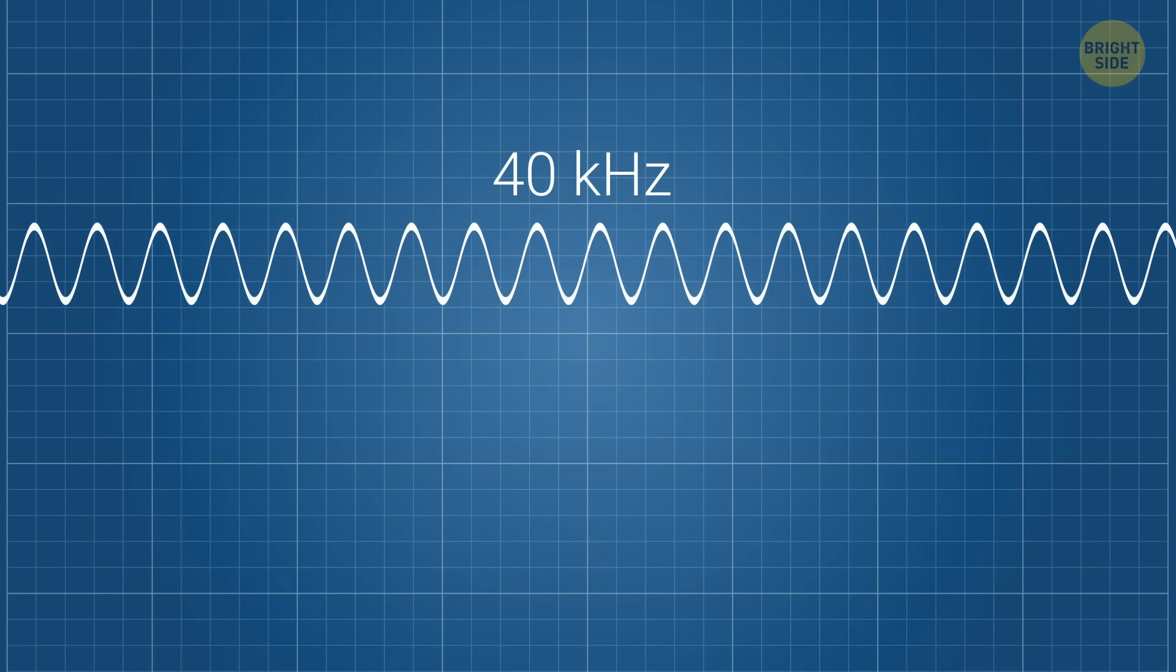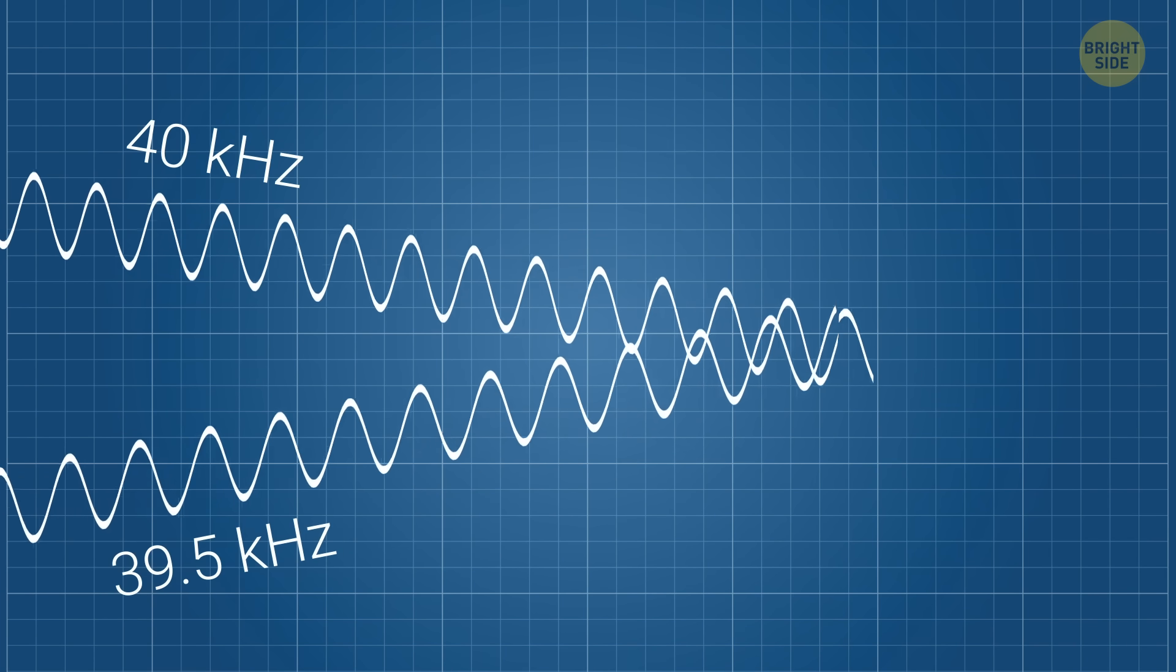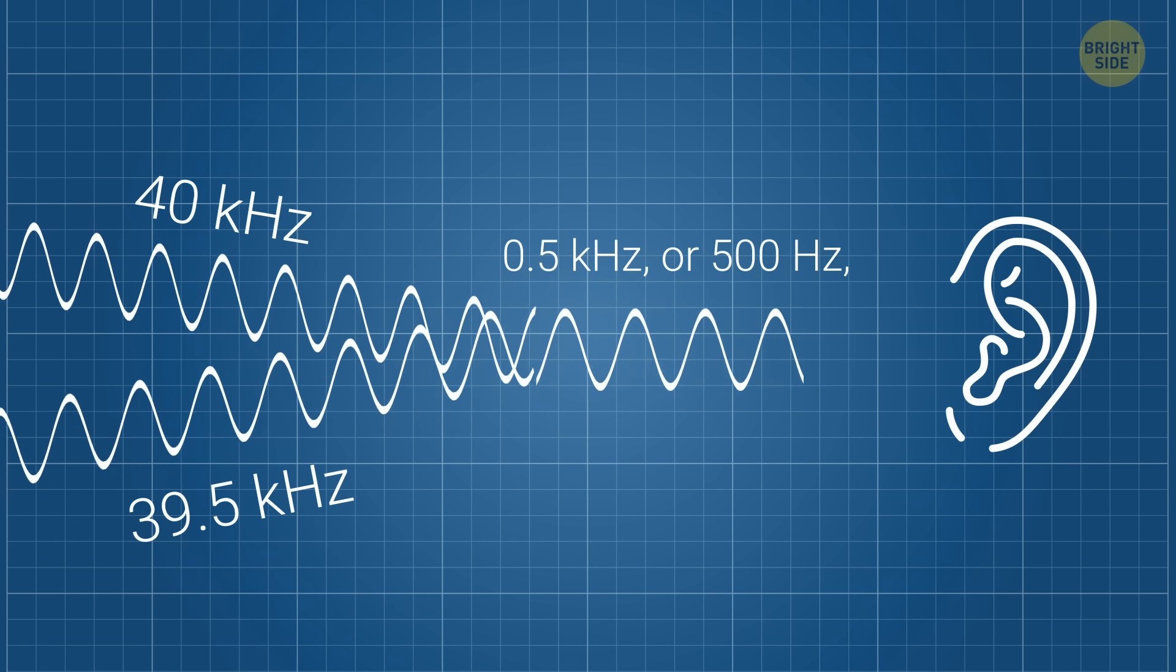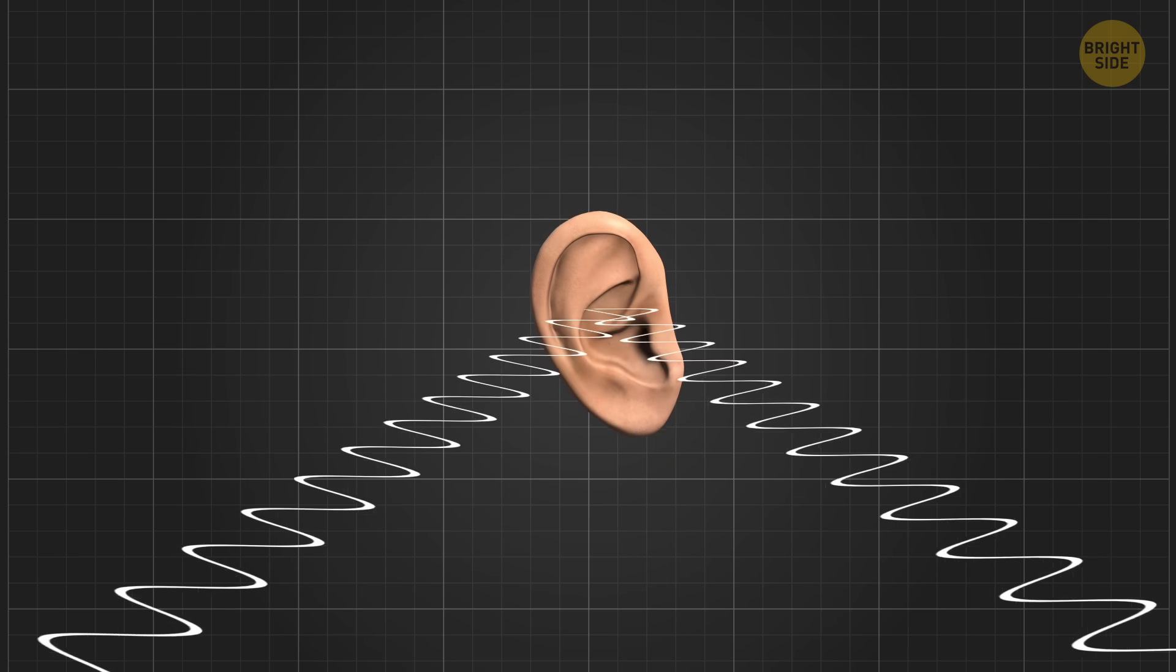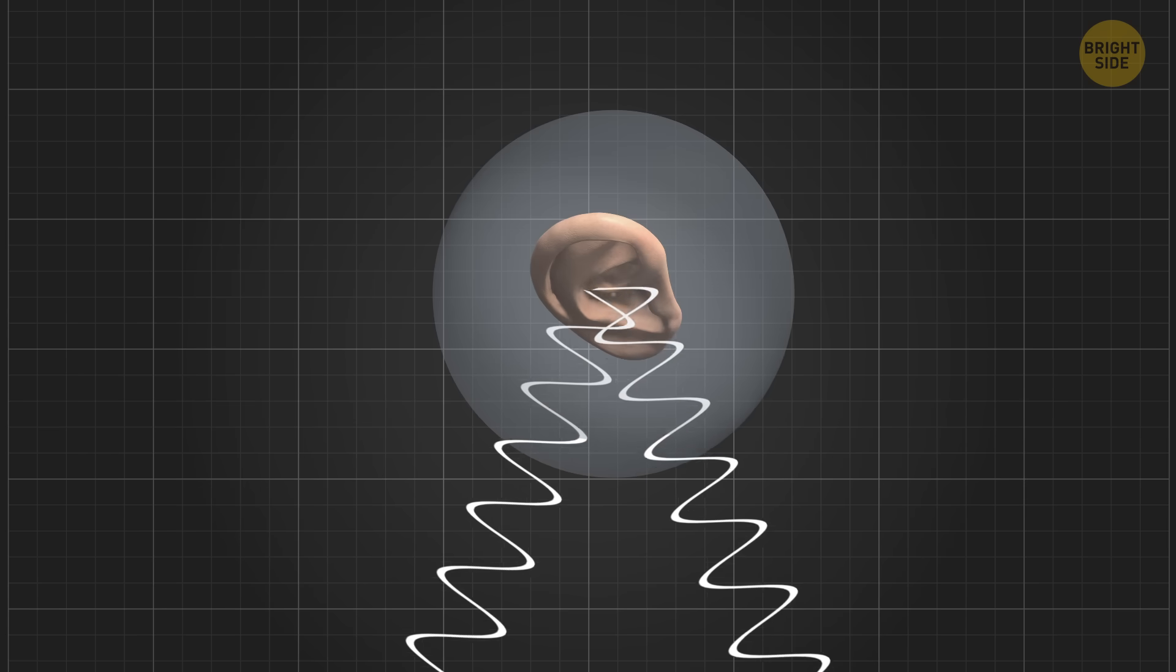Now, let's say they use one beam at 40 kHz and the other at 39.5 kHz. When these beams meet, they create a sound at the difference between those two. 0.5 kHz or 500 Hz, which is a frequency we can hear. But again, you only hear it right where those beams intersect. Everywhere else, silence.